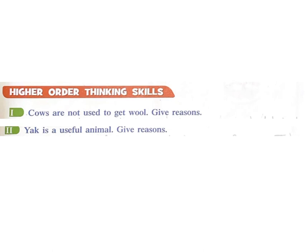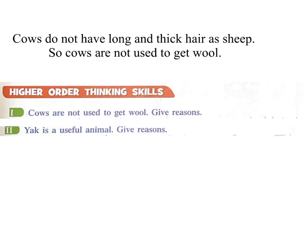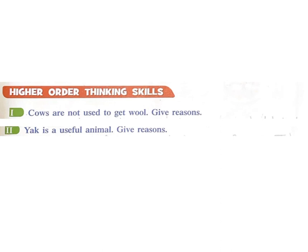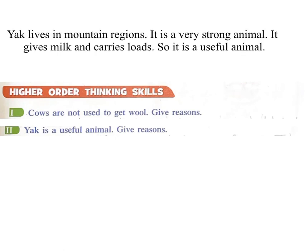Higher Order Thinking Skills: 1: Cows are not used to get wool — give reasons. Answer: Cows do not have long and thick hair like sheep, so cows are not used to get wool. 2: Why is a yak a useful animal? Answer: Yaks live in mountain regions, they are very strong animals, they give milk and carry loads, so they are useful animals.